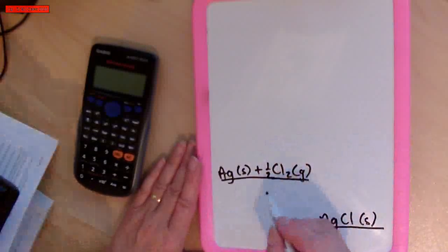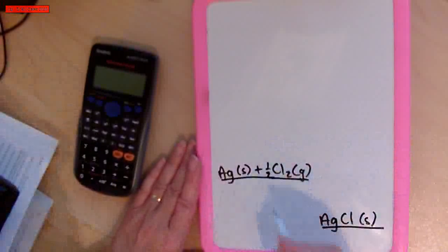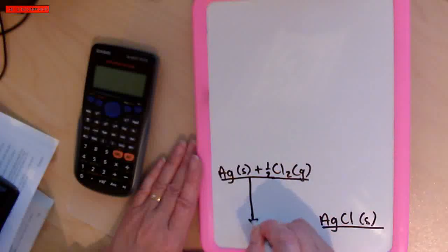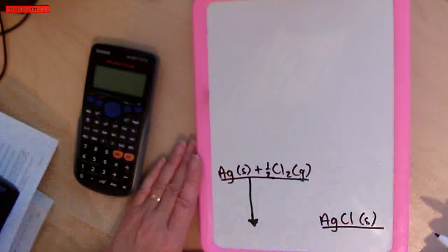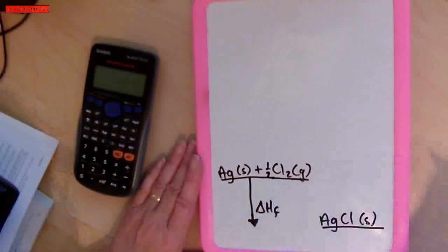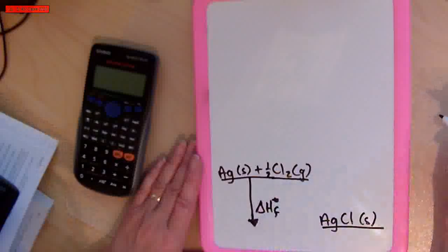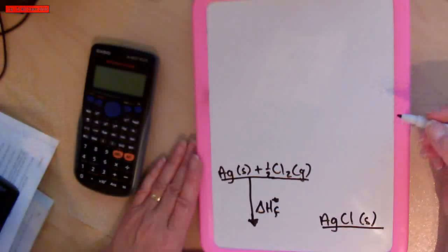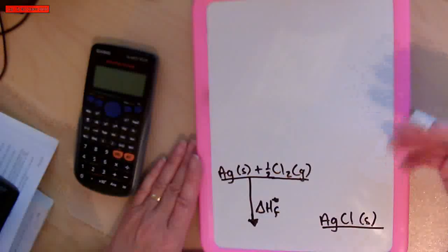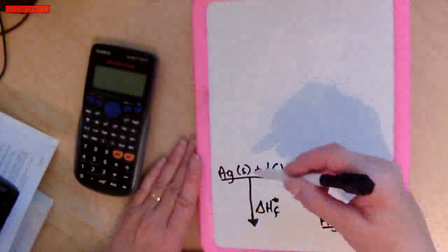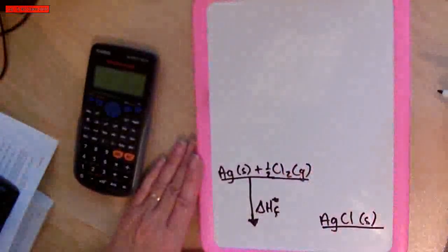We know we can make silver chloride from its elements, and that's known as the enthalpy of formation — normally given as ΔHf in its standard state. When we do these Born-Haber cycles, I like to treat one of the substances on its own and take it to its final point. And because this is a metal and a non-metal, I usually go with the metal first.